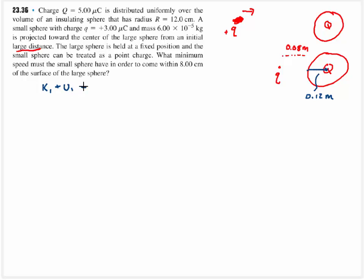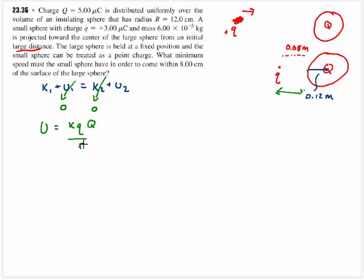The kinetic energy plus potential energy of the test charge initially equals kinetic energy plus potential energy at the end. The key word 'large distance' lets us set the initial potential energy equal to zero. At the closest point the charge is not moving at all — it has given up all kinetic energy into potential energy. The potential energy of the sphere is K times little q times big Q divided by the distance from the sphere, treating the sphere as a point charge, valid because we're outside the sphere's radius.